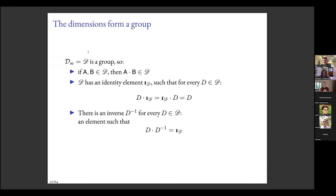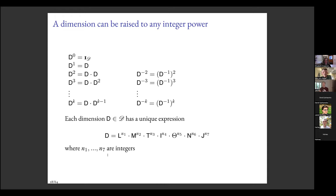There's also an inverse d⁻¹ for every dimension d such that d times d⁻¹ equals the multiplicative identity element — meaning you can divide by a dimension. That's going to be very useful for giving foundations for natural language expressions that talk about ratios. Since natural language can involve any combination of dimensions — including exotic ones like 'miles per gallon per mile per hour' — no dimension can be ruled out as uninteresting.